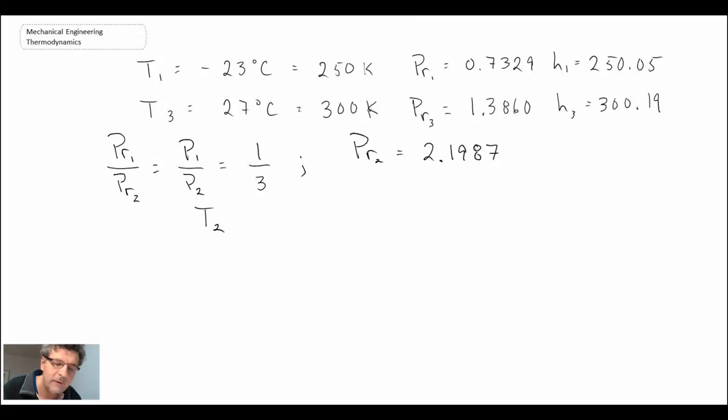Knowing the relative pressure at state 2, we can then go into the tables and look up the temperature. We have to do an interpolation here, and similarly between 3 and 4.